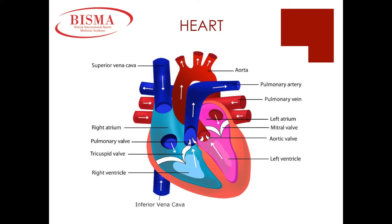Within our heart, we have two upper collecting chambers called the atrium. We also have two bottom pumping chambers called the ventricles. The left side of the heart carries oxygenated blood and the right side carries deoxygenated blood.